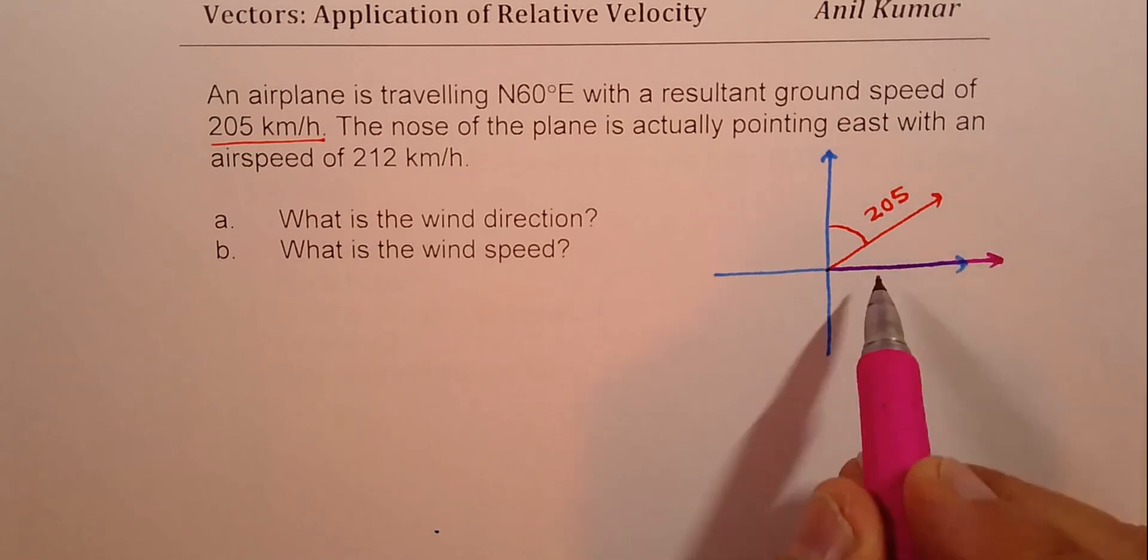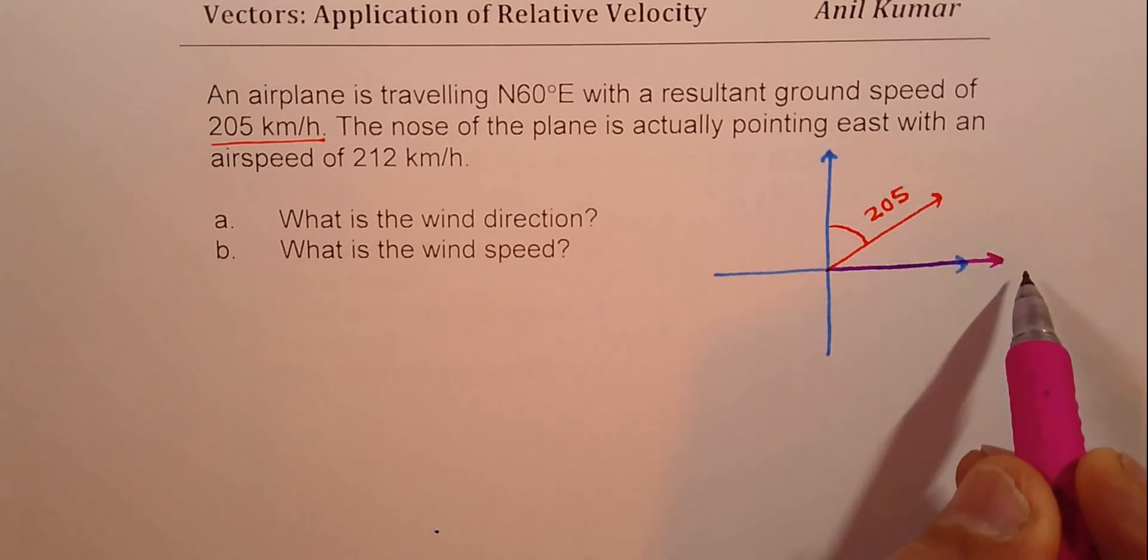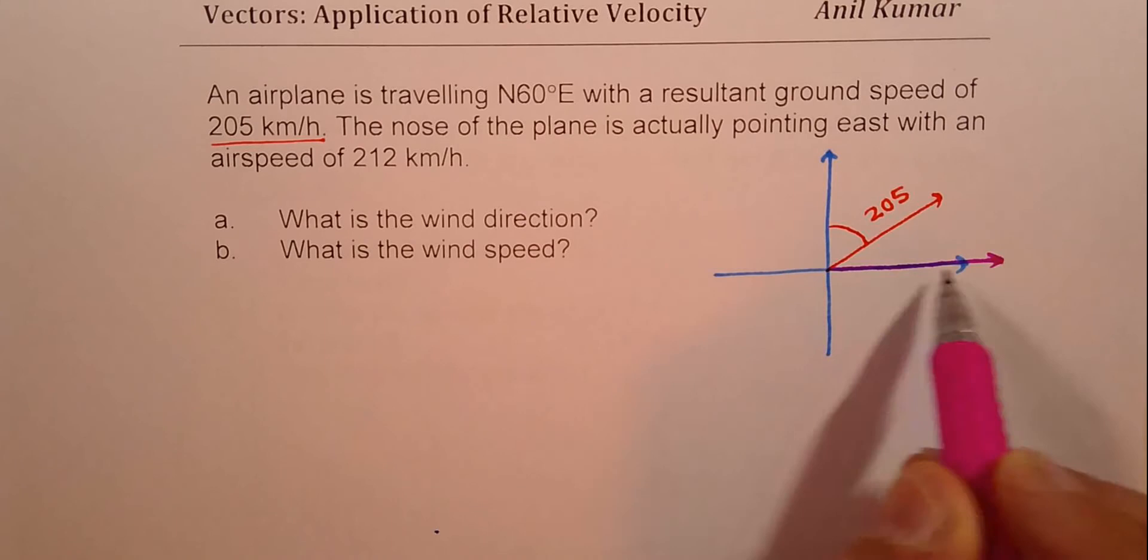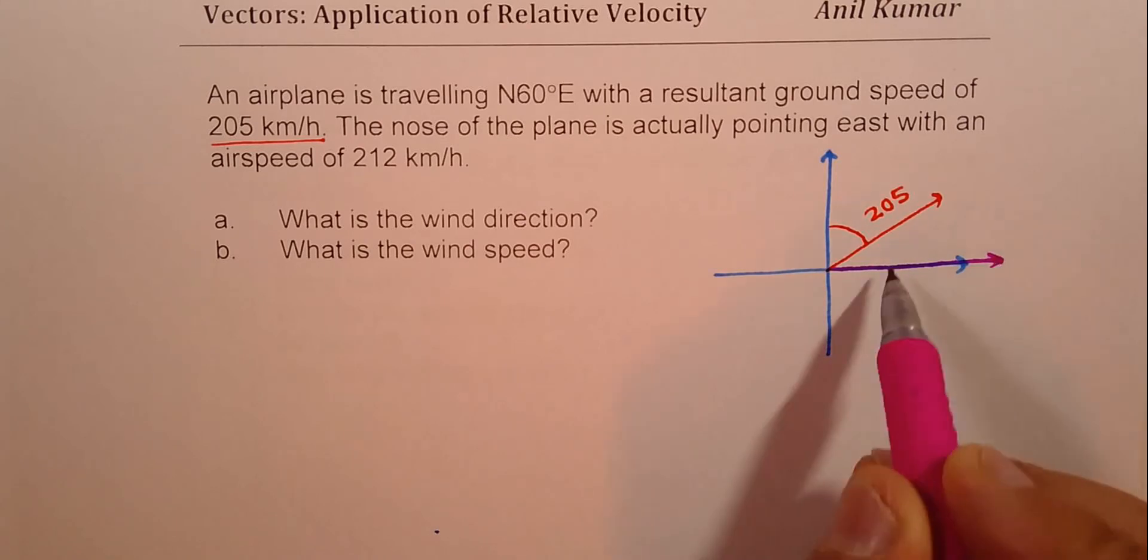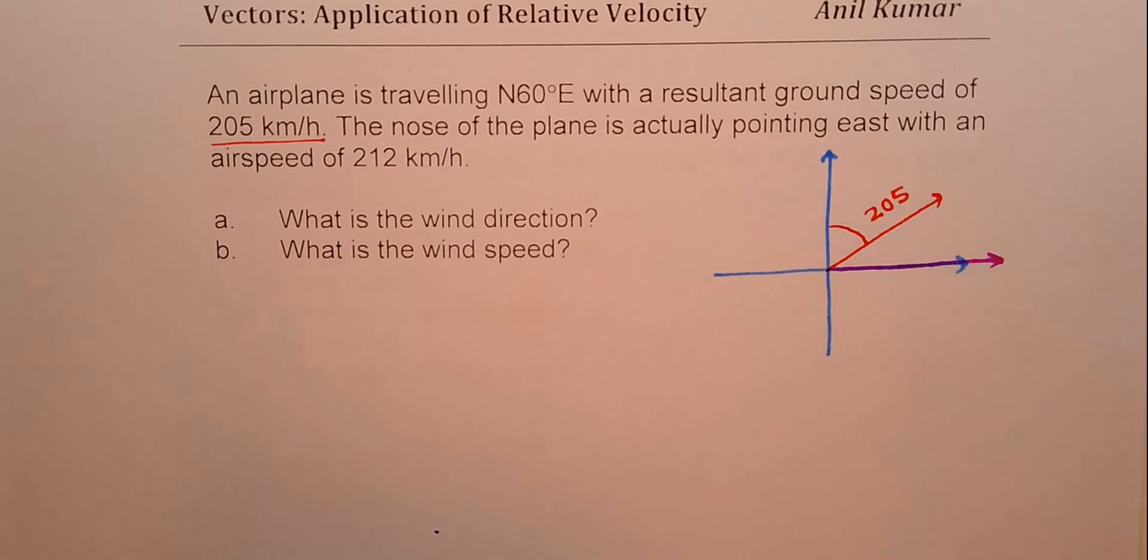Pointing east, that means the plane is going towards east, but because of wind, it moves in that direction. You get an idea, right? So the resultant is as shown in orange.